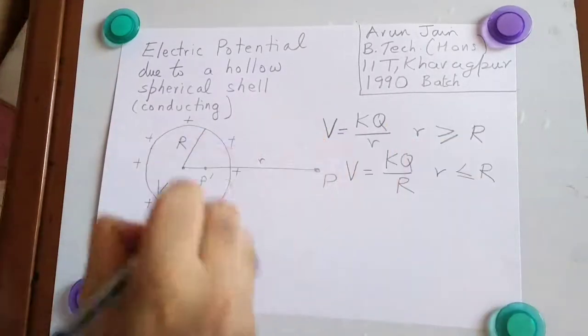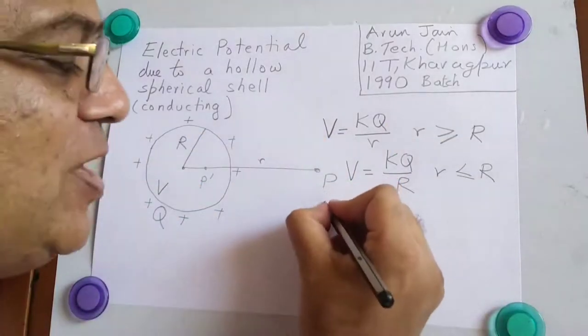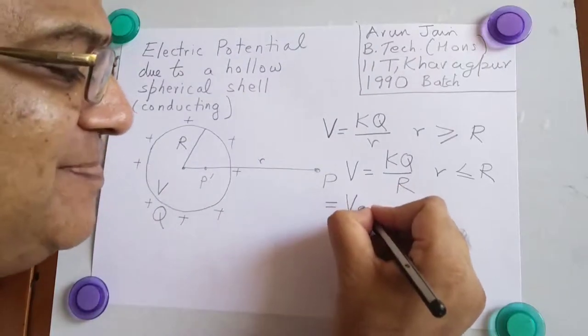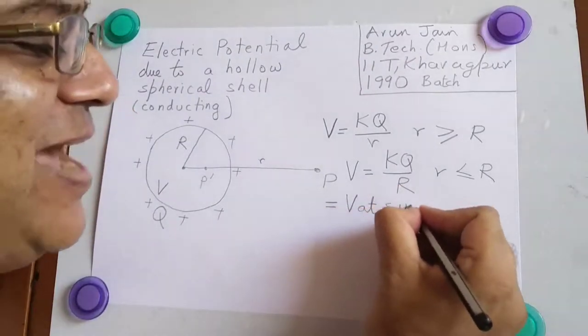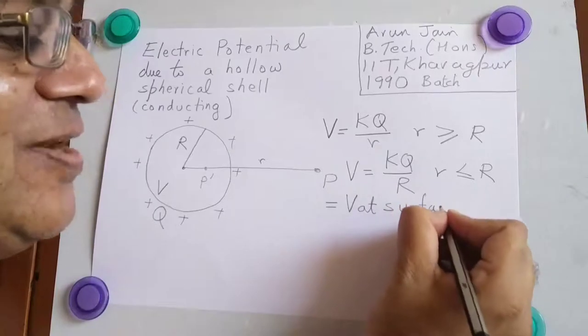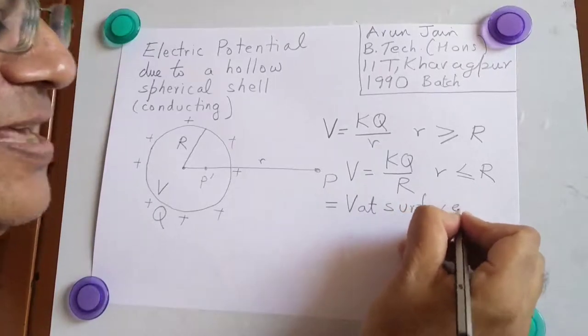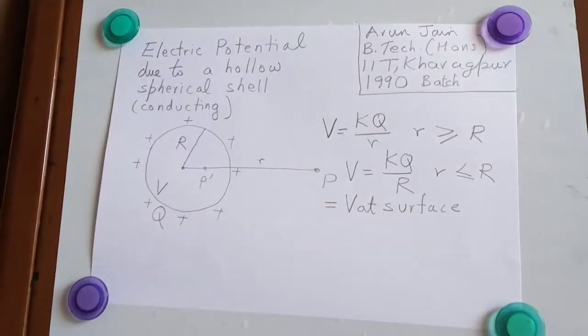V is same at every point and equal to V at surface. So entire conductor including the cavity is an equipotential. This is very important to remember.